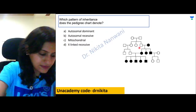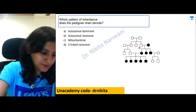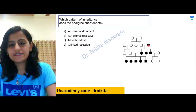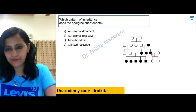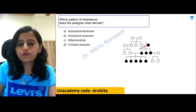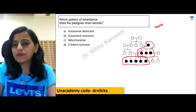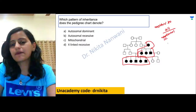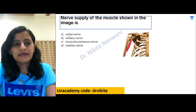This pedigree chart shows the mother transmitting the disease to all the children — both daughters and son — while the father is not transmitting to any. Mother to all: this means maternal transmission. M for maternal, M for mitochondrial. This is mitochondrial inheritance pattern — very, very important.